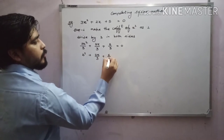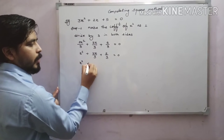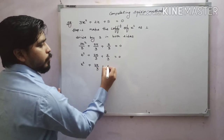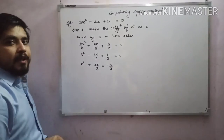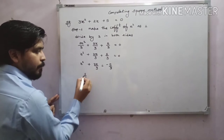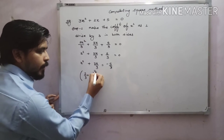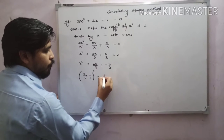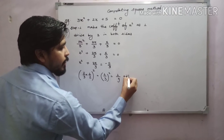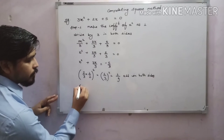Now solve that expression: x² + 2x/3 + 5/3 = 0. Now bring the constant to the right side: x² + 2x/3 = −5/3. Now take the coefficient of x, which is 2/3, multiply it by 1/2, giving 1/3, and take it as a square — so (1/3)² = 1/9. Add 1/9 to both sides.